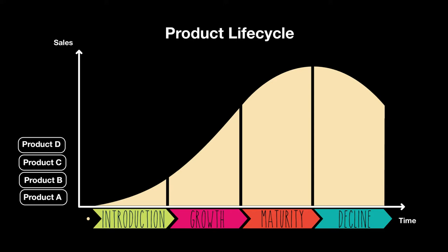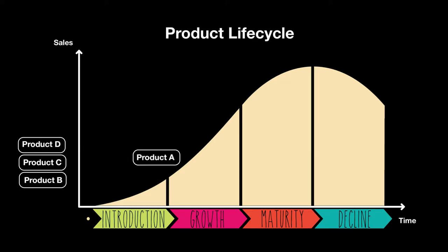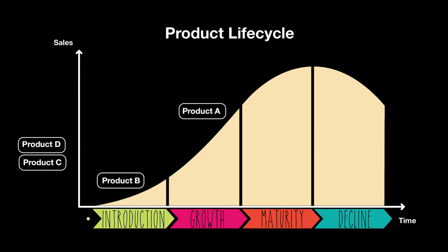A typical business would start off launching one product — let's call it product A. A company will first launch it and see its introduction phase. Over time, with better promotion and more customers getting to know about you, product A would get into its growth phase. At this point, from the money you've made, you'd want to bring in more options, so product B would be launched.